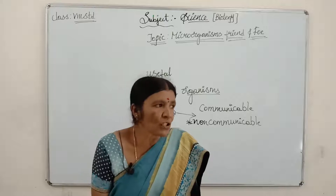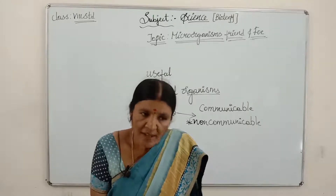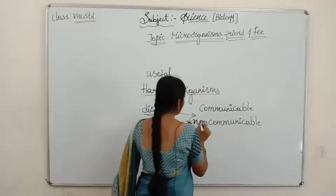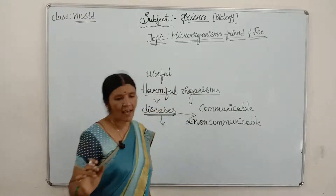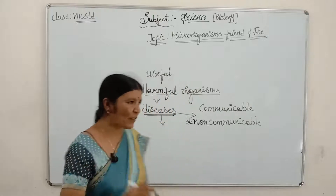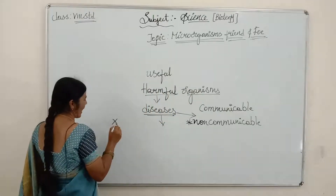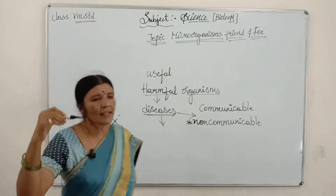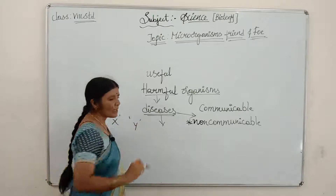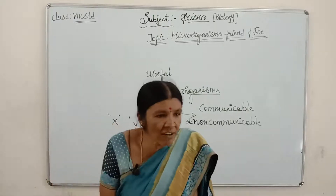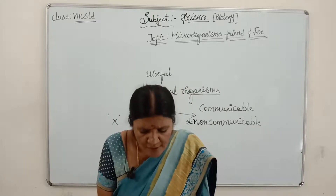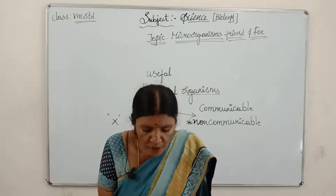What are examples of non-communicable diseases? Heart attack and asthma are examples. Suppose a person X has a heart attack and he usually moves with his friend Y — you would not expect Y to also get heart attack, because heart attack is a non-communicable disease.